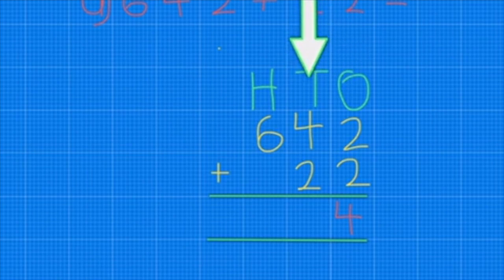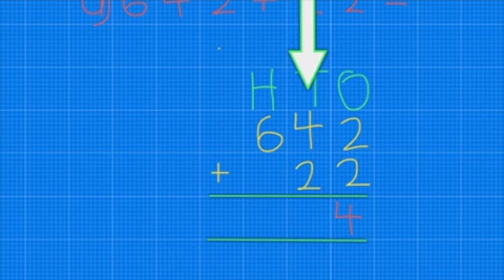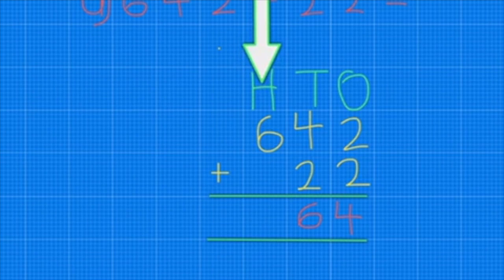And I move over to my tens column and I know that 4 plus 2 is 6, write that in the equal sign. And then I pop over to my hundreds. Now it's 6 plus nothing. Now zero is still a number, so 6 plus 0 goes down there.